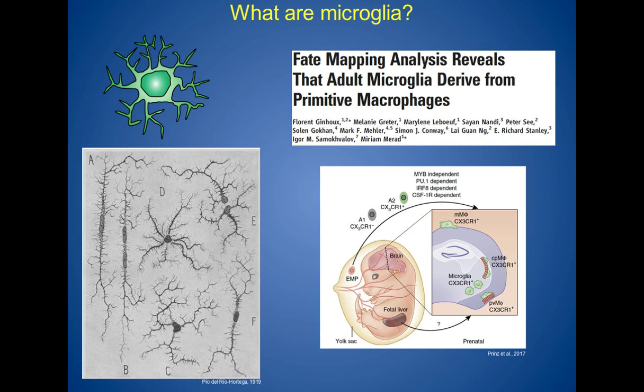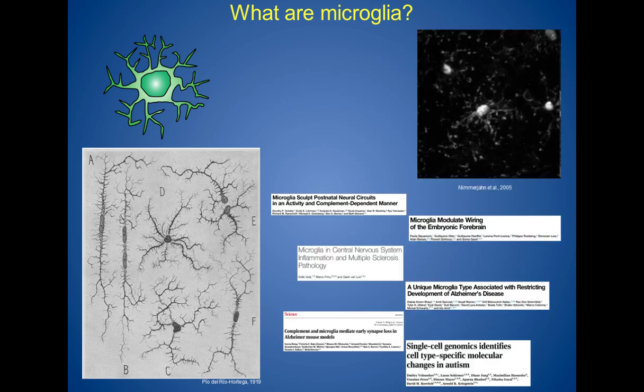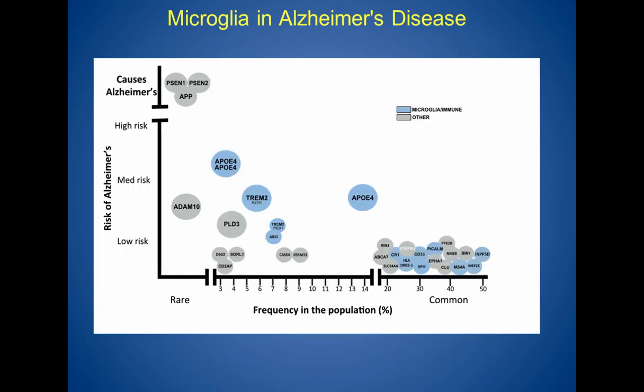What he didn't know then, and what we're still trying to understand, is how those different shapes correlate to different functions of microglia. We are taking the tack of single-cell genomics to try and answer what microglia's function is in both the healthy and the diseased brain. A number of different publications have implicated microglia in tasks from normal synaptic wiring to synaptic pruning during development in the visual system, as well as Alzheimer's disease, autism, multiple sclerosis, and many other neurodegenerative diseases.